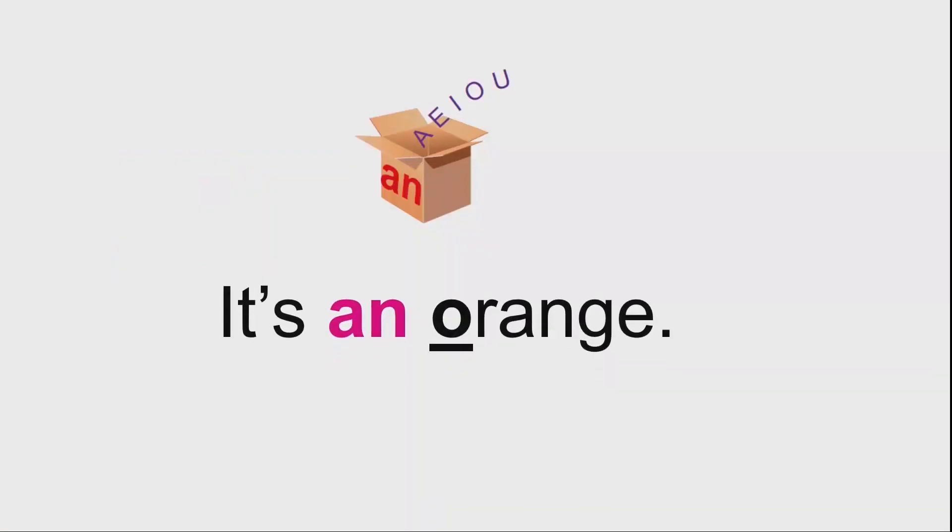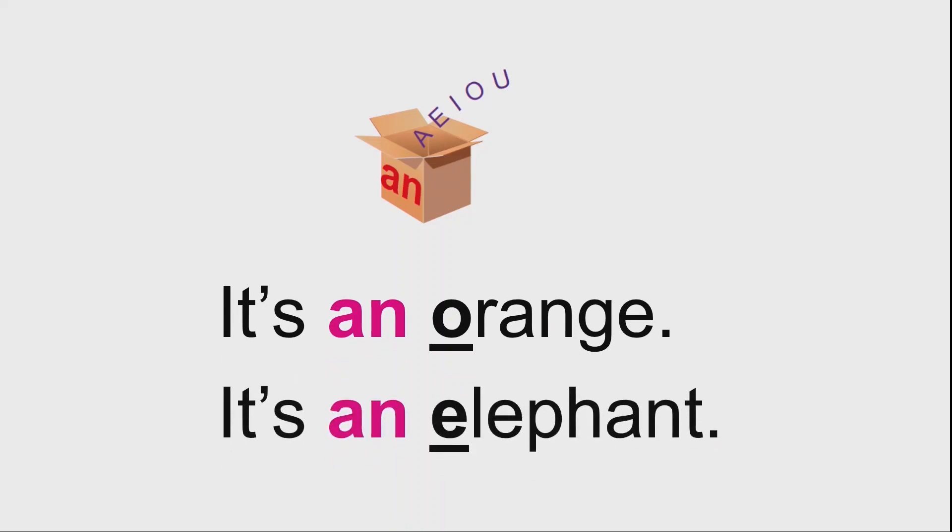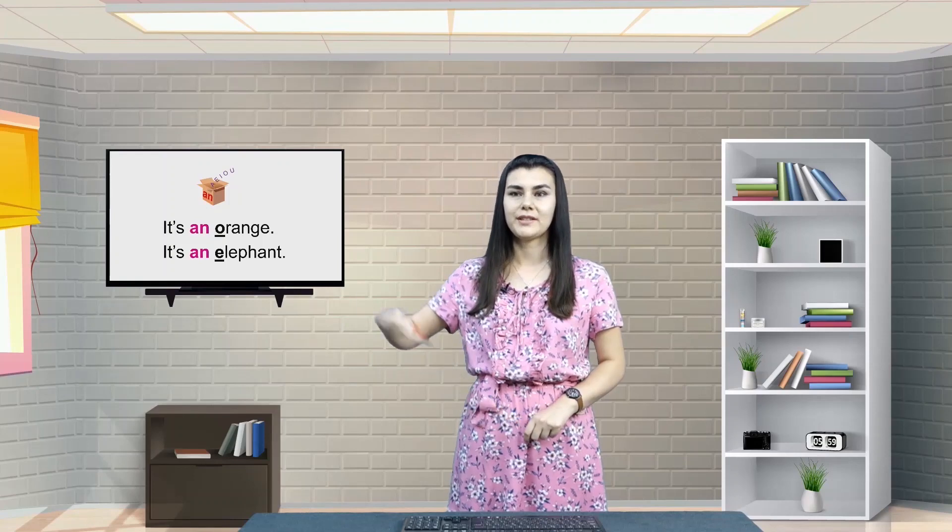If the word starts with a vowel, like A, O, E, I, U, then we use an indefinite article AN. Look at the examples. It's an orange. It's an elephant. Orange starts with O, elephant starts with E — they start with vowels. That's why the correct article to use here is AN.